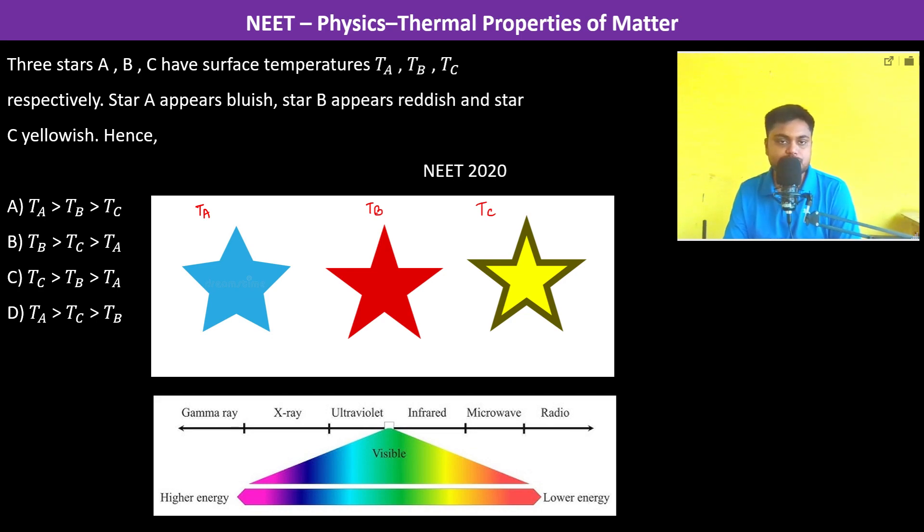If we see the electromagnetic spectrum, yellow, red, and blue, the wavelength increases here, so therefore energy is going to decrease.